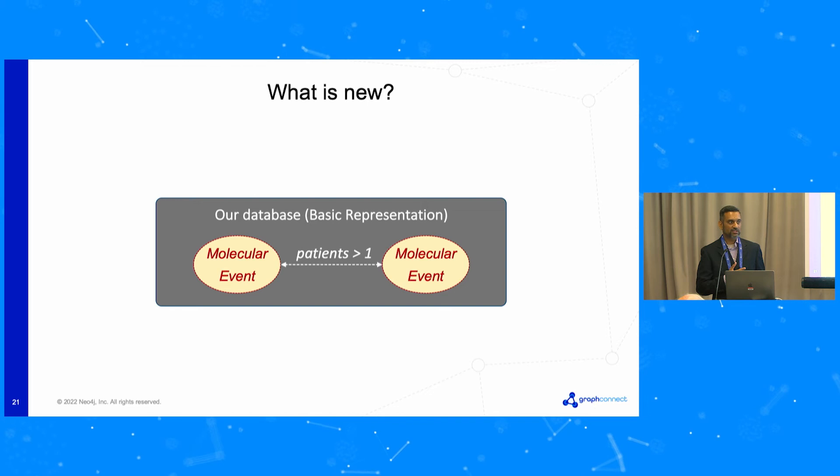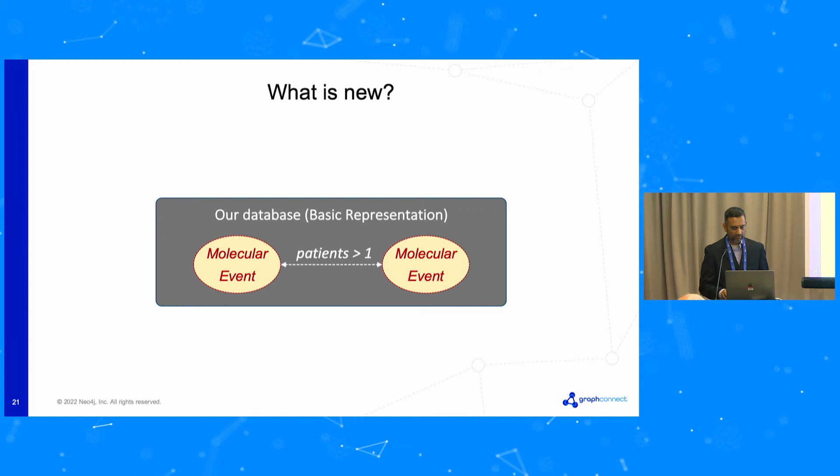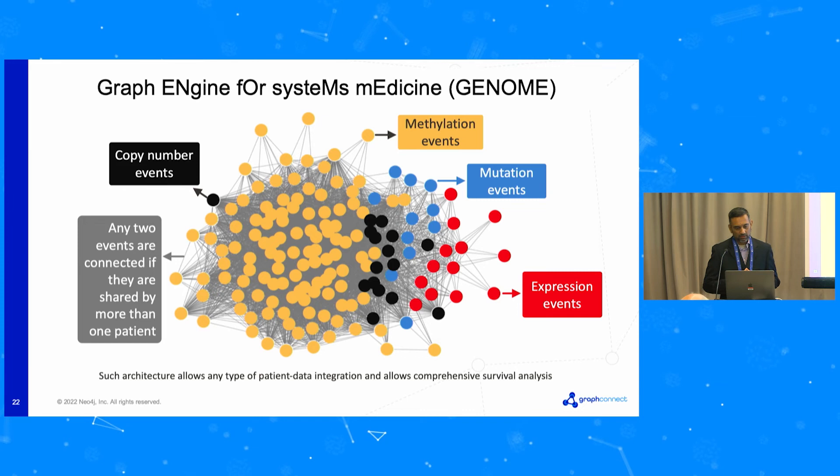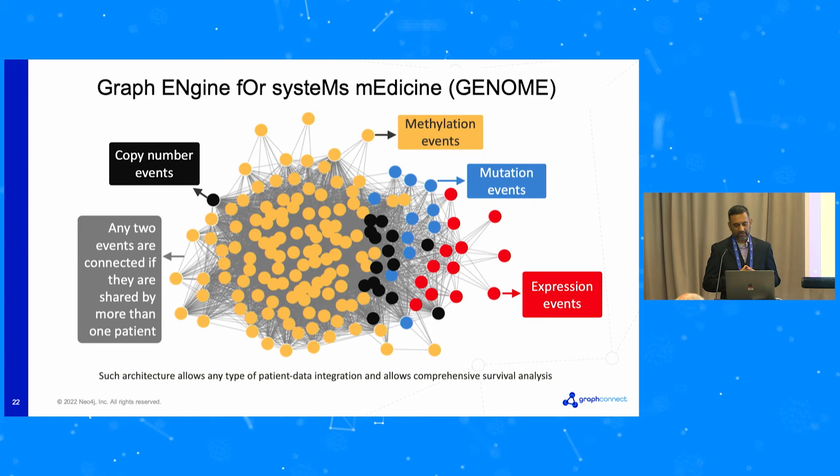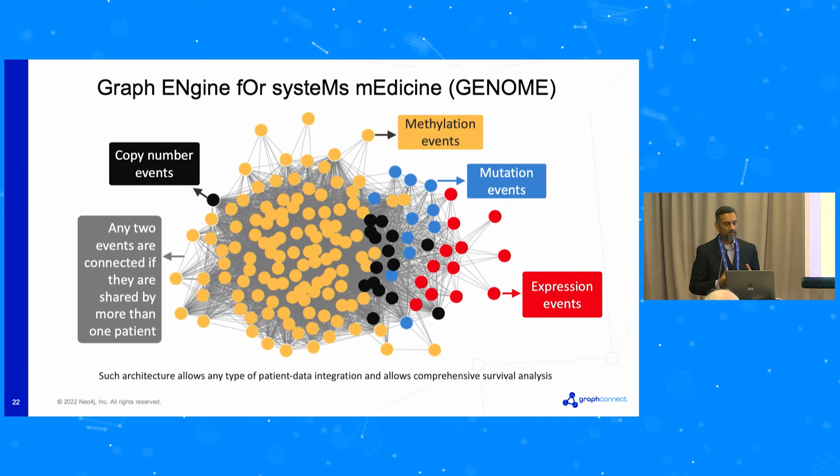We call this the GEnome for graph engine for systems medicine. This is an example graph database we have developed. We have methylation events, mutation events, expression events, and copy number events. Two events are connected if they are shared by more than one patient.